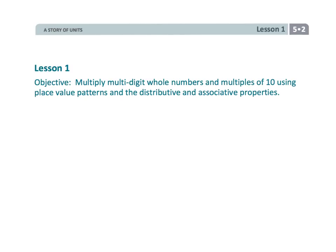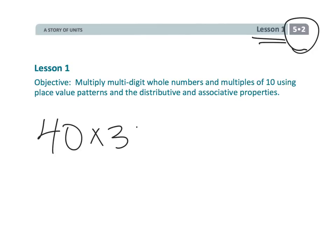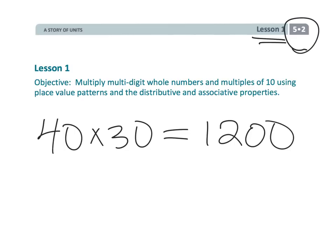That wraps up fifth grade module 2 lesson 1 — the idea of using mathematics to understand the trick of taking the 4 and the 3, multiplying them, and then sticking on those two zeros.